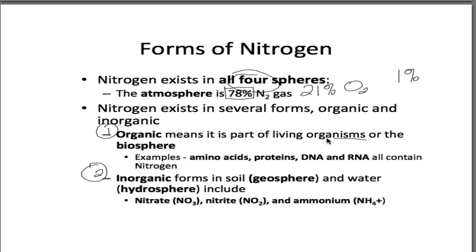Organic just means it's part of living organisms or a living system — that is the biosphere. So we've hit the atmosphere and the biosphere. Amino acids, proteins, DNA, RNA — all of that contains nitrogen, so you can see how important nitrogen is to the biosphere. That's organic nitrogen. Inorganic nitrogen comes in the other two spheres. In the geosphere, there's a lot of nitrogen in the soil, and you can also find it in some rocks and minerals. In the hydrosphere, you've got nitrate, nitrite, and ammonia or the ammonium ion. So every single sphere has nitrogen.